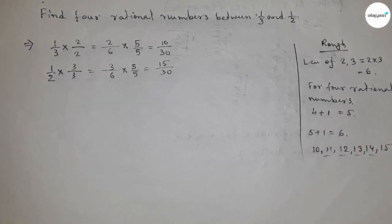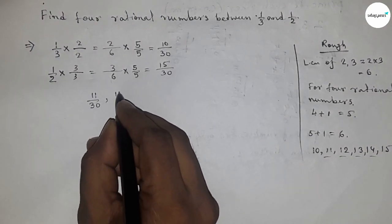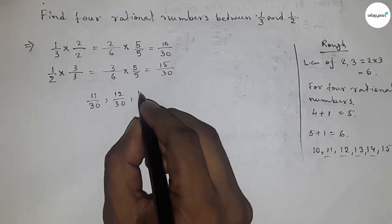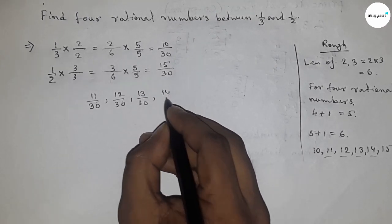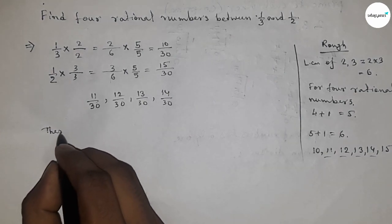11/30, 12/30, 13/30, 14/30 - these are the four rational numbers. Therefore, the four rational numbers between 1/3 and 1/2 are 11/30, 12/30, 13/30, and 14/30.